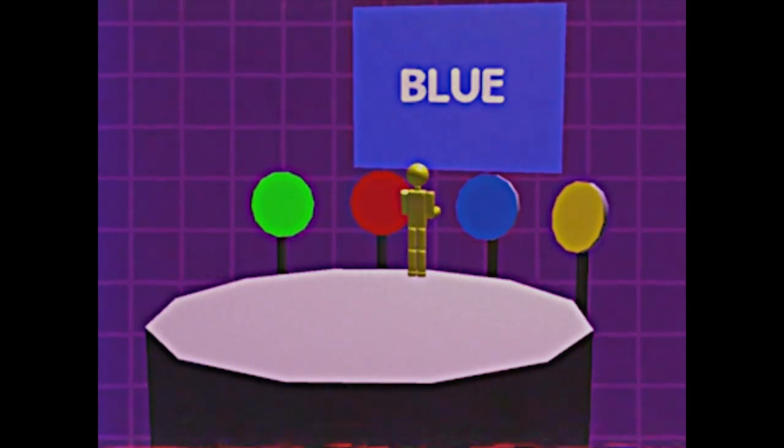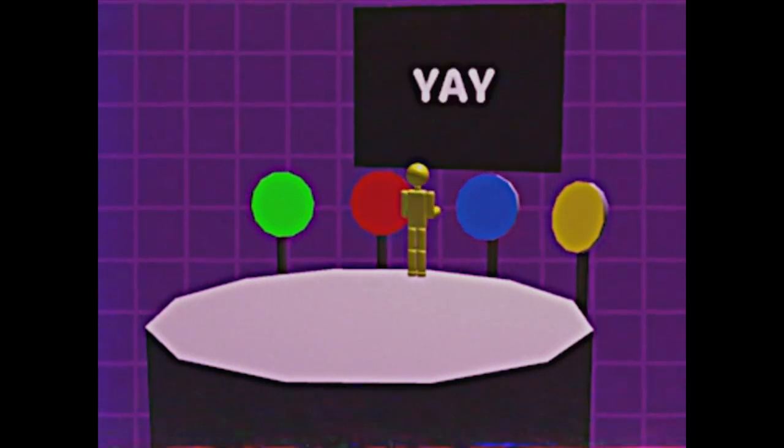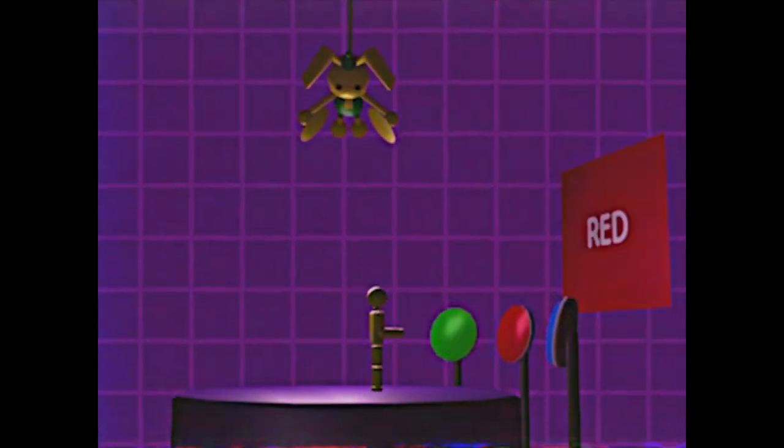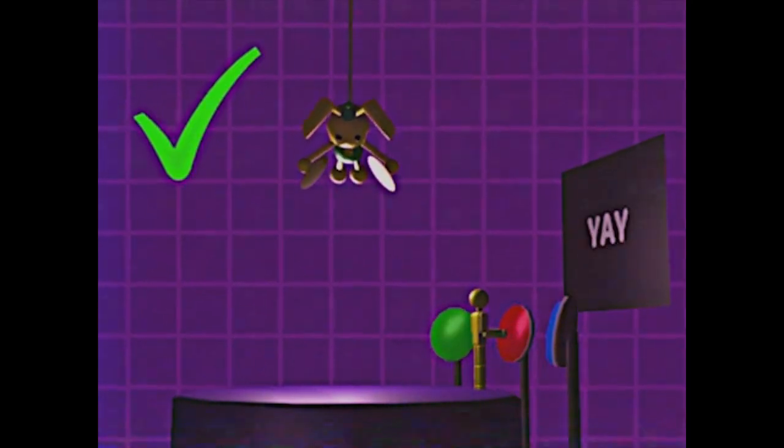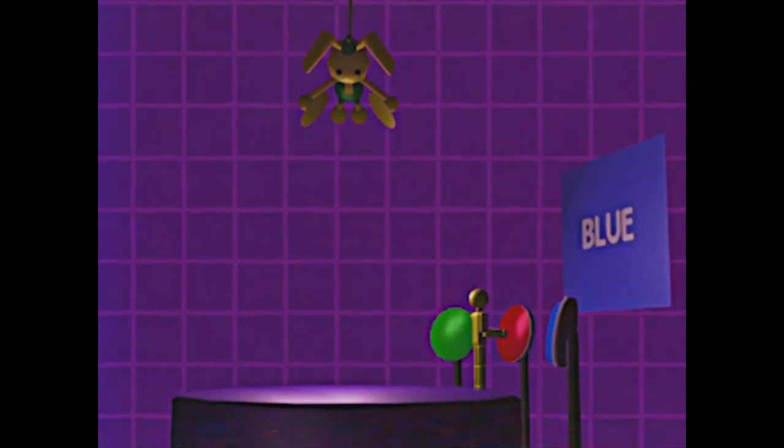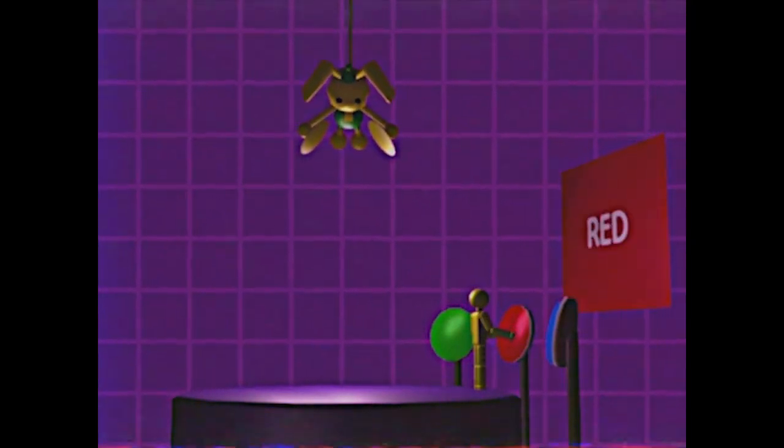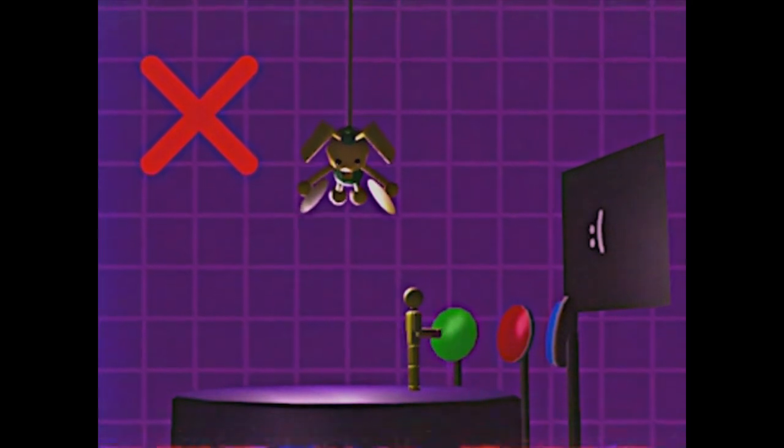Bunzo will slowly lower towards you. When you complete a color pattern correctly, Bunzo will rise back up. When you input a pattern incorrectly, Bunzo will lower towards you faster.